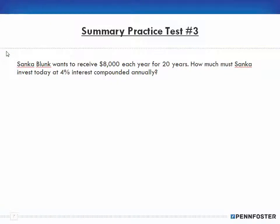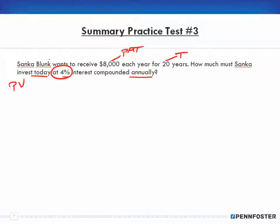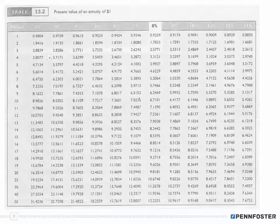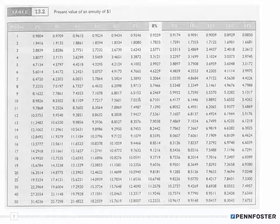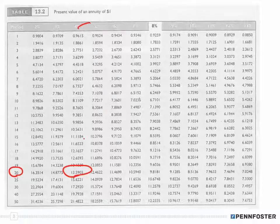Problem number three: Sanka Blunk wants to receive $8,000 each year for 20 years. How much must she invest today at 4% compounded annually? So payment is $8,000, time is 20 years at 4% — and this is a present value problem. We look at the present value table for 20 periods at 4%.